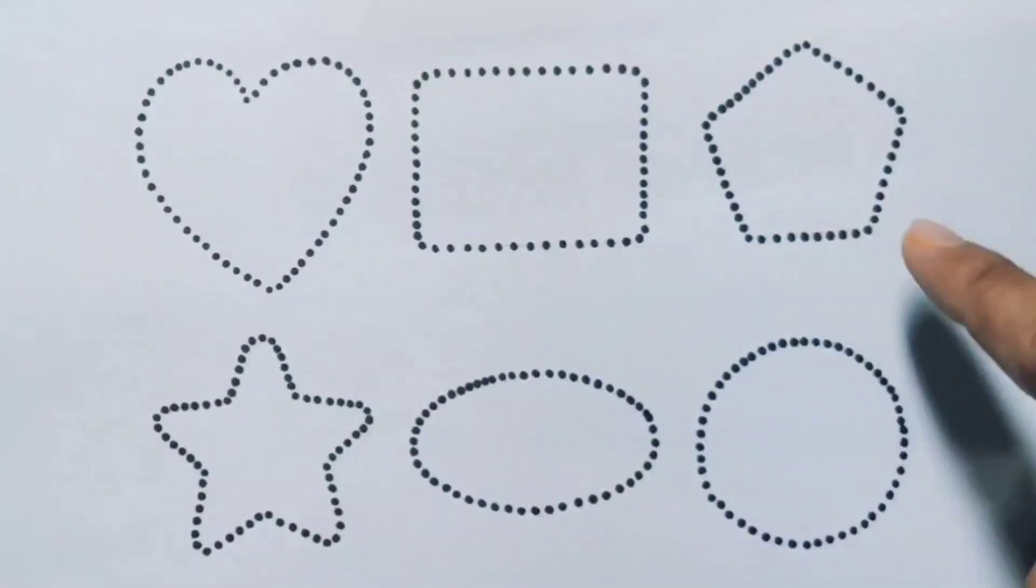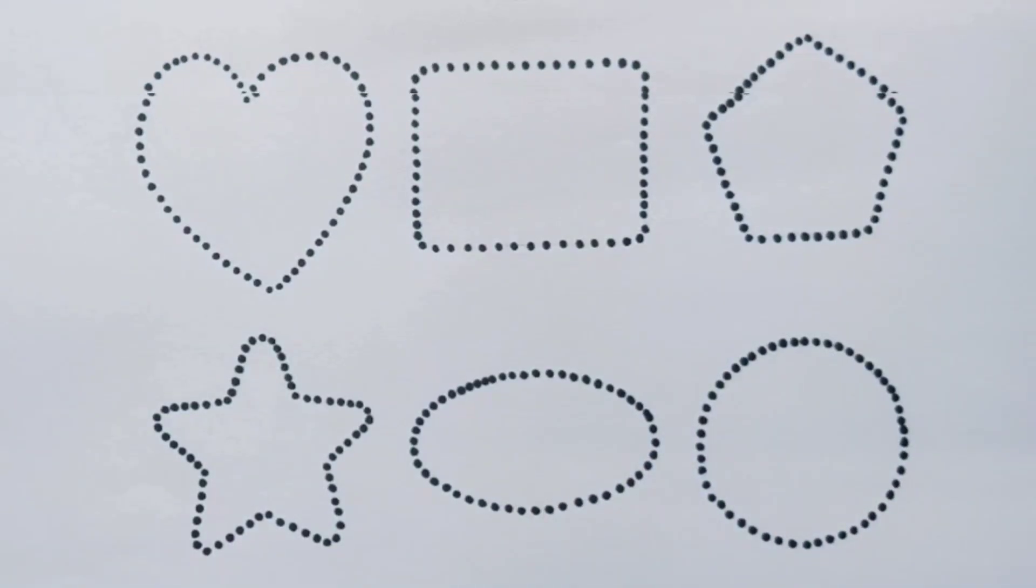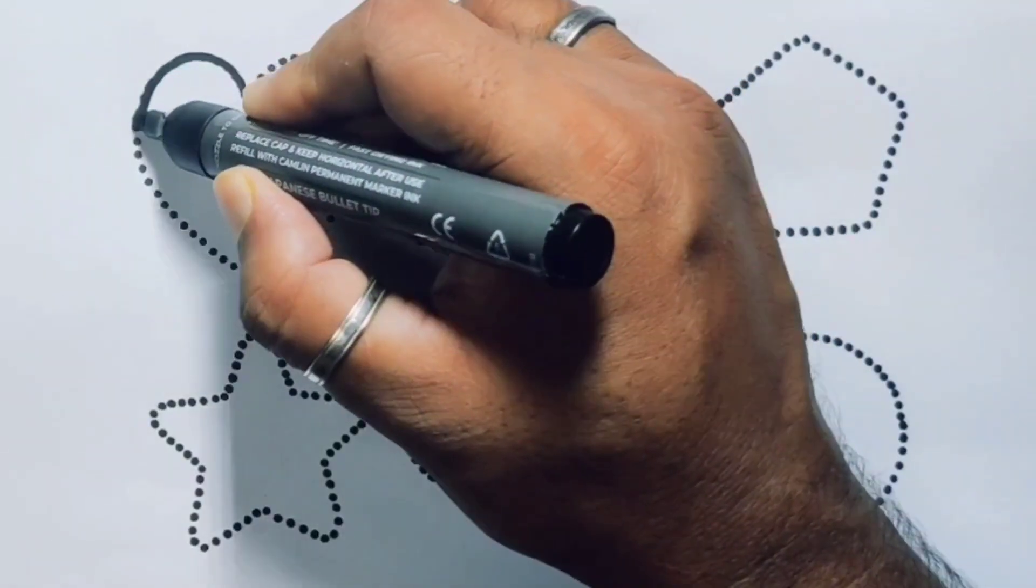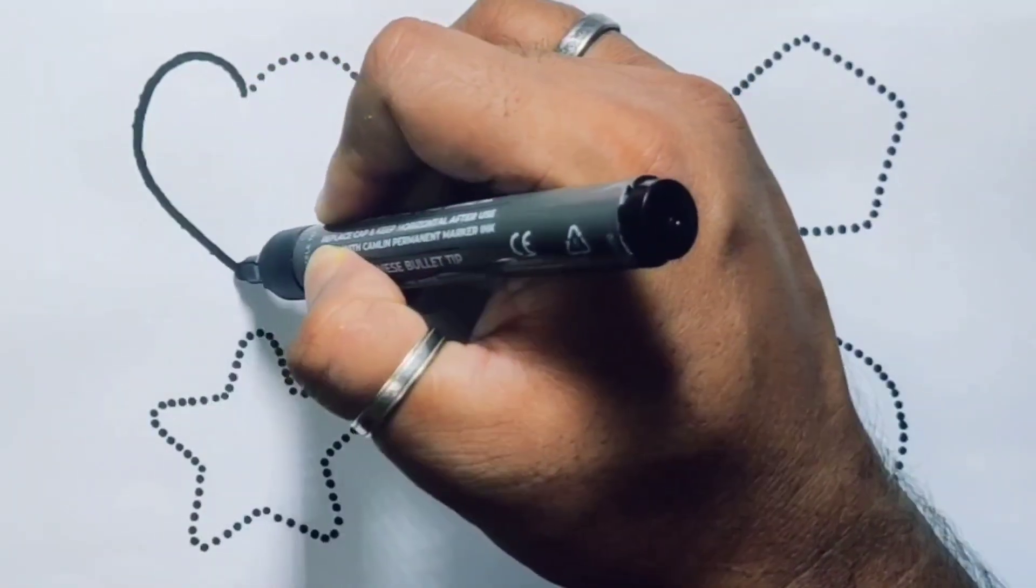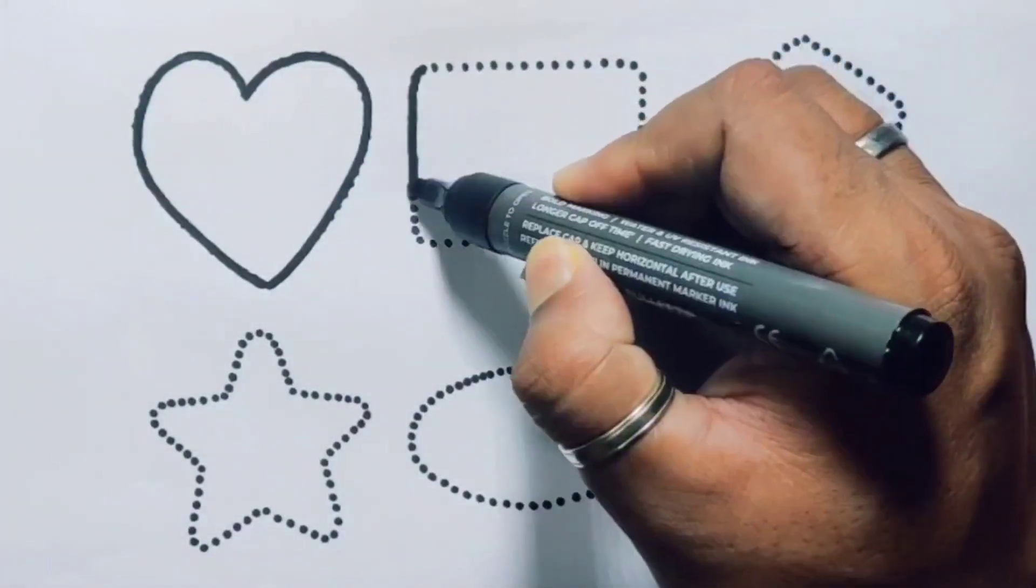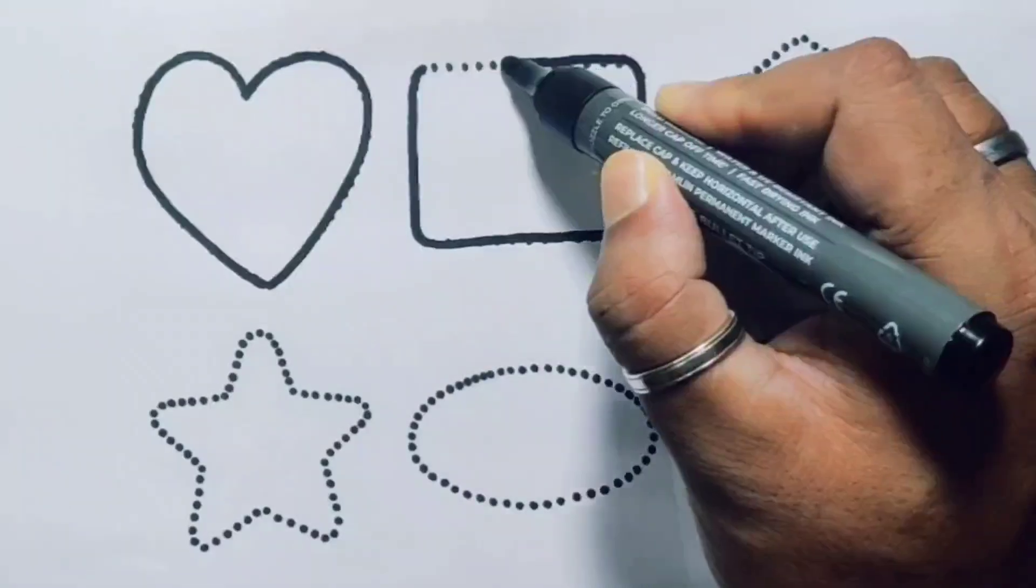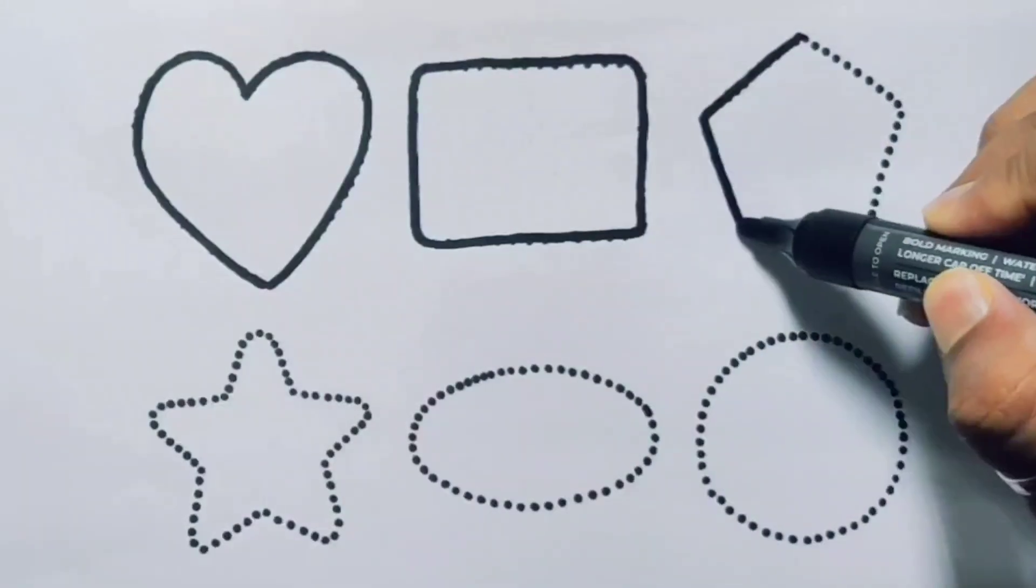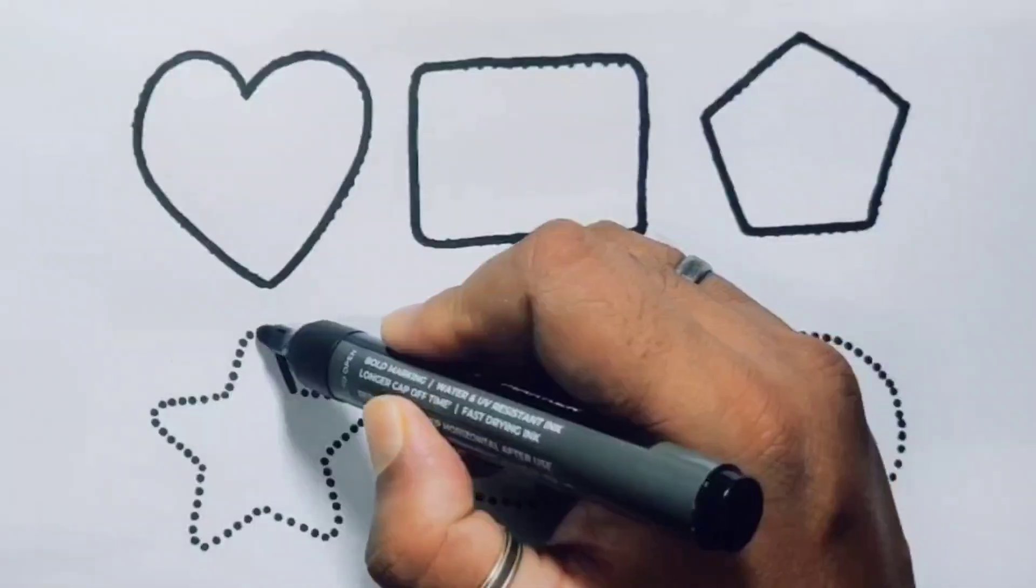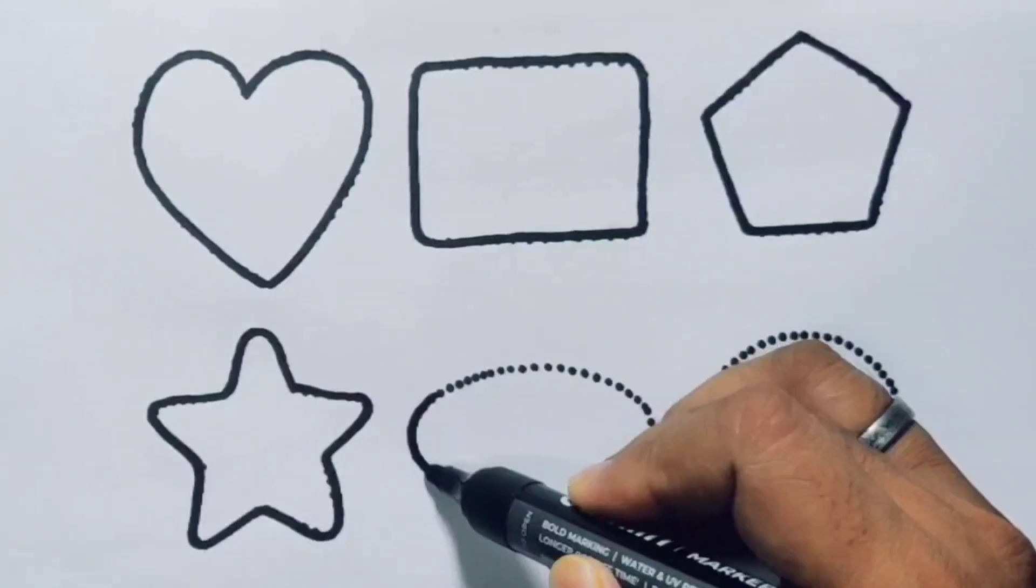...rectangle, pentagon, star, oval, and circle. First, we're going to draw the shapes: heart, rectangle, pentagon, star, oval...